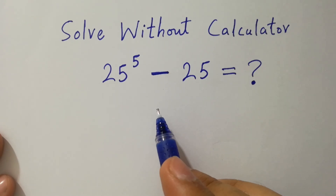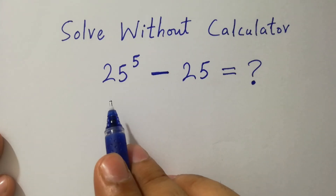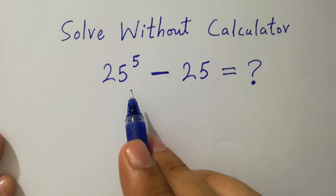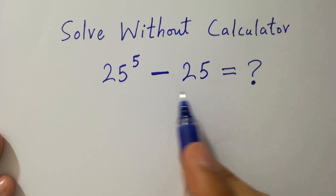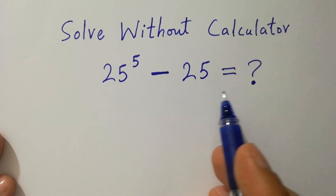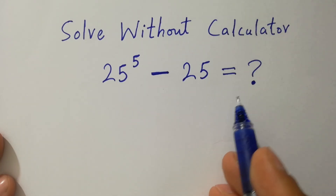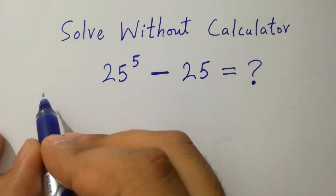Hello friends. 25 to the power 5 minus 25 equal to what? Let's have a solution.